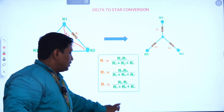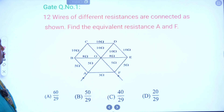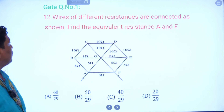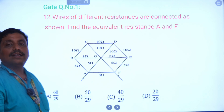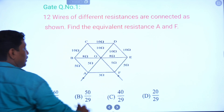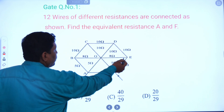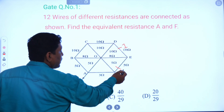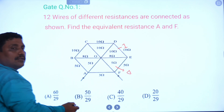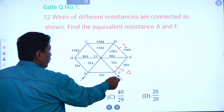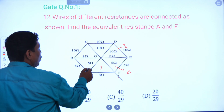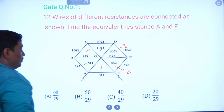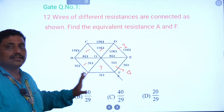This is one of the questions asked in the GATE: 12 wires of different resistance are connected as shown in the figure. Find the equivalent resistance between A and F. Here, DOE is one triangle (delta connection), OEF is another delta, AOF is another delta, BOA is another delta, BCO is another delta, and CDO is also another delta. So totally 6 deltas are available.